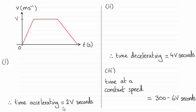Which turns out to be 2V seconds, and in part two the time in which it was decelerating which was 4V seconds, and in part three the time that it travelled at constant speed, and that is 300 minus 6V seconds.